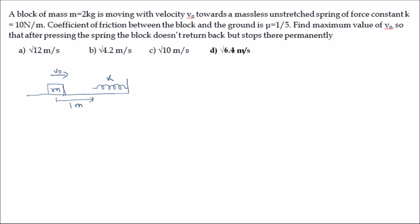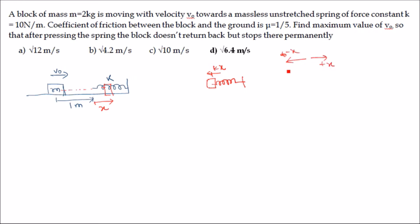The coefficient of friction between block and ground is μ = 1/5. Find the maximum value of v₀ such that after pressing the spring the block does not return but stops permanently. Suppose a velocity v₀ is given — it moves a distance and then compresses the spring through a distance x and stops.